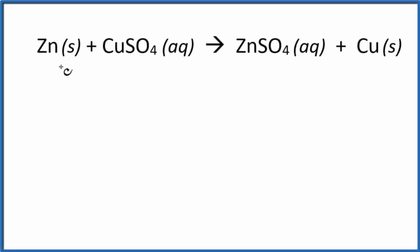To write the net ionic equation for Zn plus CuSO4, that's zinc plus copper sulfate, the first thing we do is balance the molecular equation. This is called the molecular equation, and it looks like it's already balanced. We have the same number of zinc, copper, sulfur, and oxygen atoms on each side. So the molecular equation is balanced.